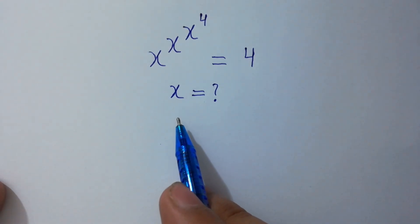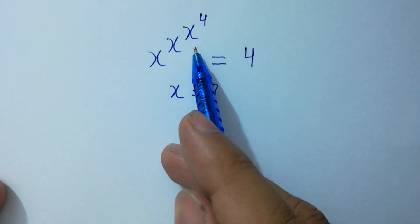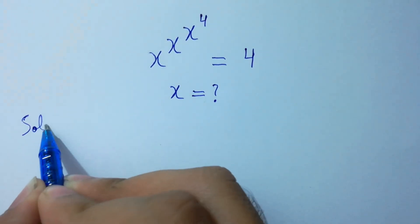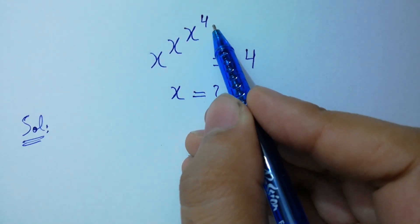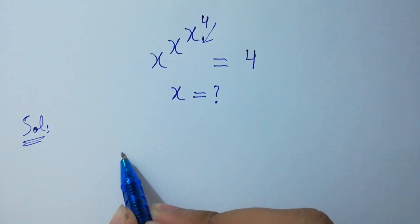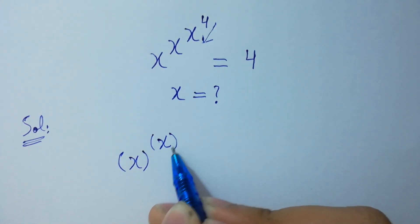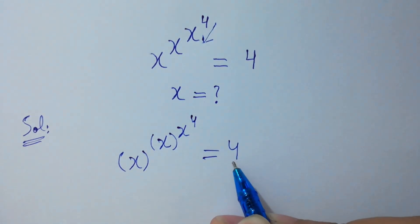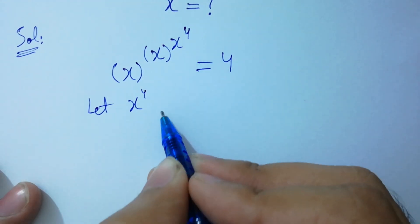Hello friends, find the value of x if x to the power x to the power x to the power 4 equals 4. Let's solve it. Apply the right to left rule, moving from x to the power 4 inward. Let x to the power 4 equal to y.